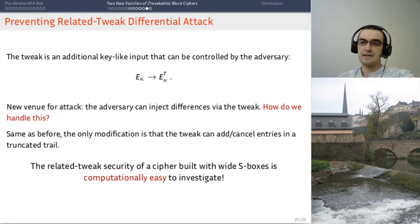What this means is that the related tweak security is very easy to assess, both from a conceptual and from a computational standpoint, when you have a cipher with wide S-boxes, which is built using the long-trail strategy. So, we have gone from how do you build a wide S-box, to how do you build a cipher using a wide S-box, and now, finally, why do you want to build a cipher with a wide S-box? And one of the reasons why you want to do that is that it gives you very easy security arguments in the related tweak setting.